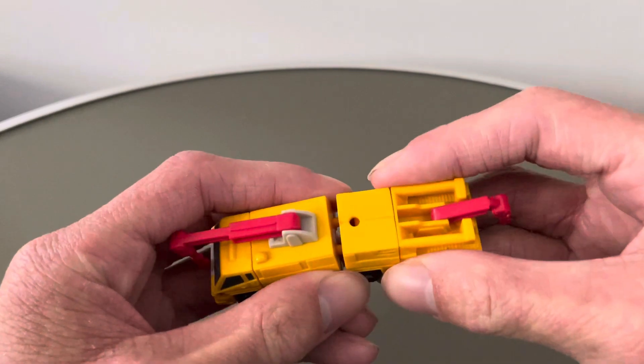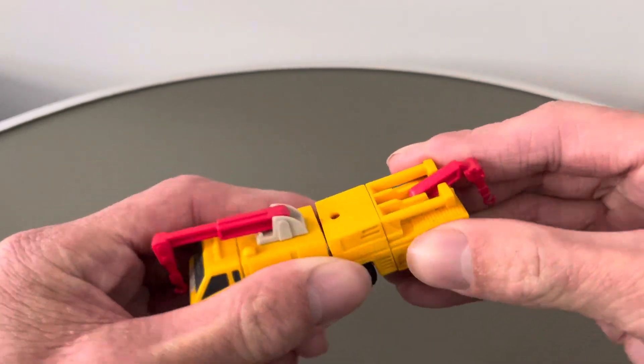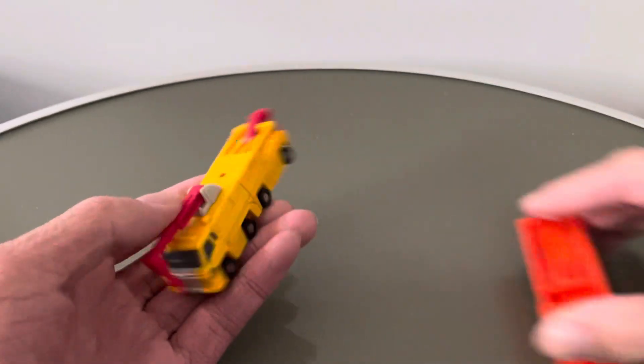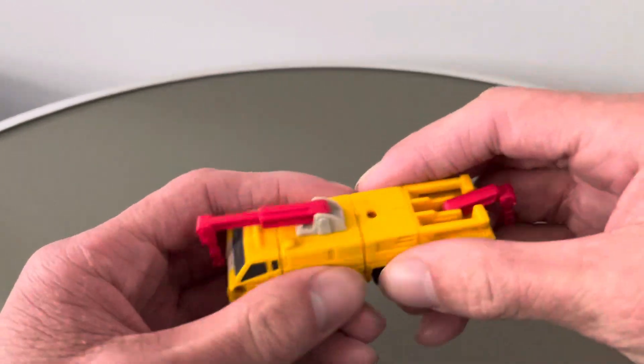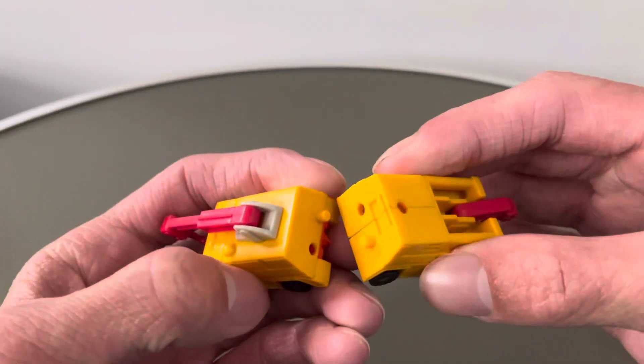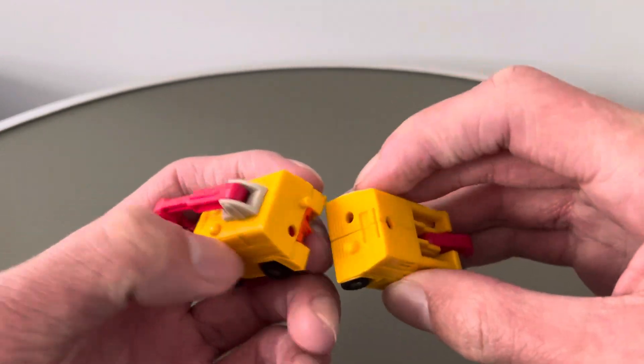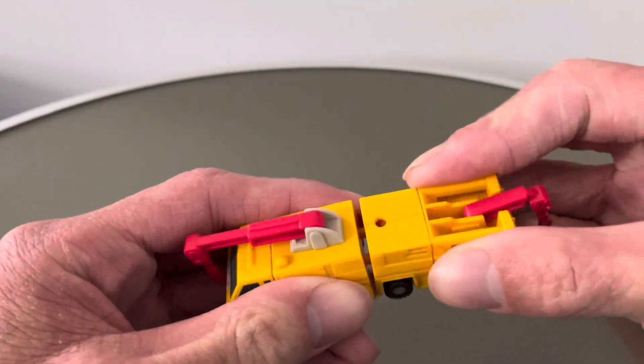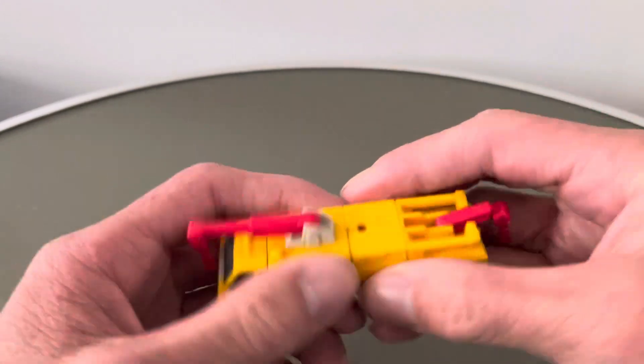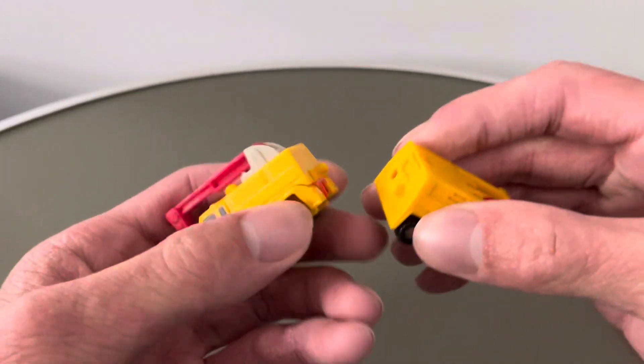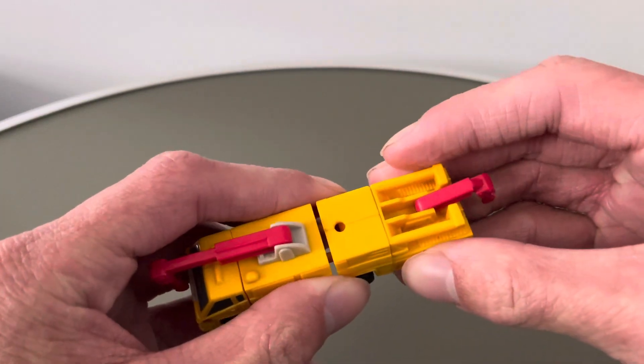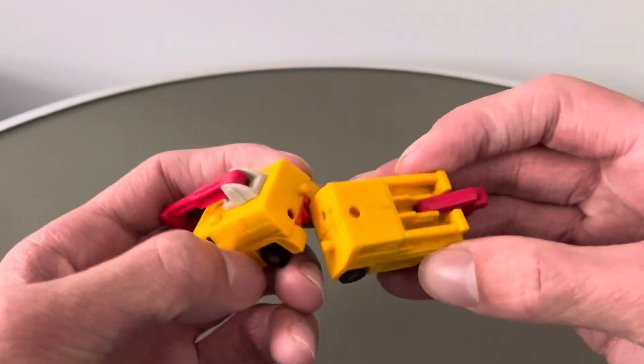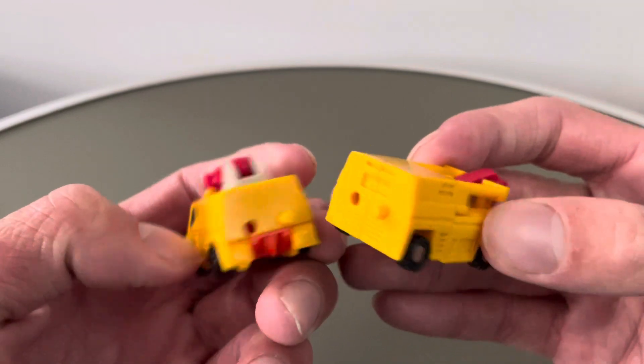These came carded as six MicroMasters. There's three separate larger vehicles, each of which are made up of two MicroMasters each. And the whole point of MicroMasters combiners being, as you can see, you can split them apart and they connect with these pegs. So it's not your typical combiners.